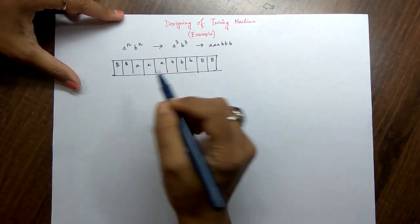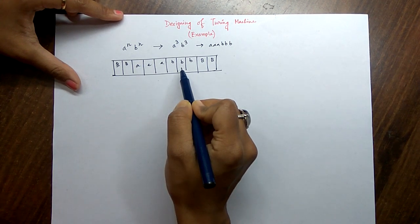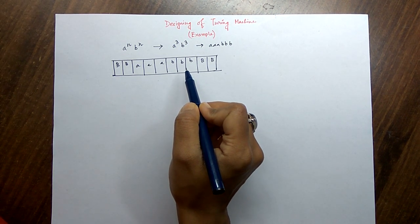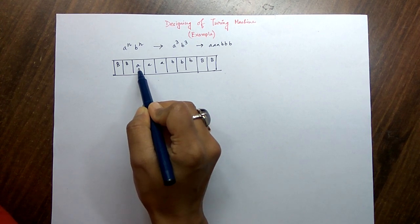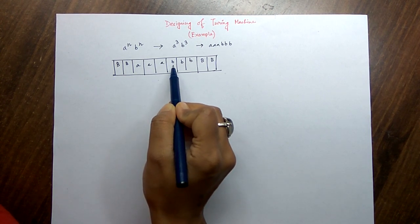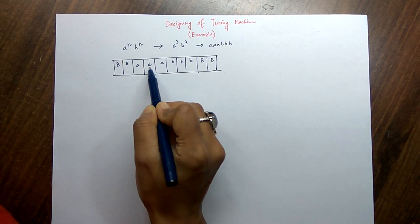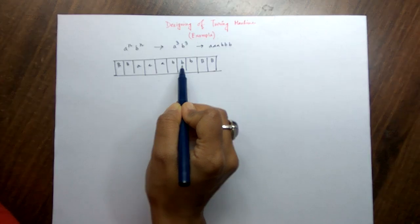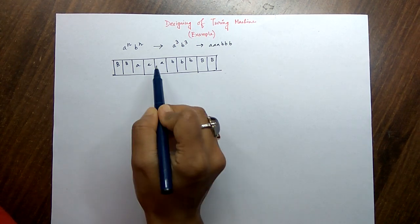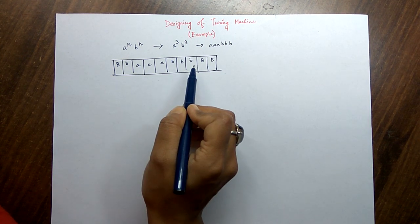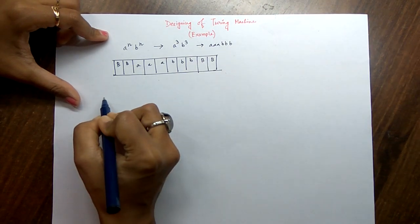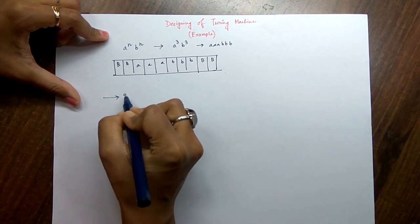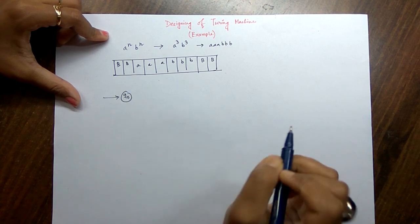Now the logic is to count the number of a's and the number of b's together. How we can do that: first we will count the first a, then we will go to the right hand side and count the first b, then we will come back to the second a and count that, and then again we will go to the second b. In this way we will count all the a's and all the b's.